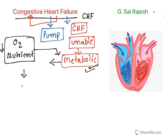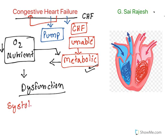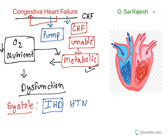Now why does this condition occur? It occurs due to dysfunction in systole as well as in diastole. Systole means contraction of the heart; diastole means relaxation of the heart. For systolic dysfunction, the primary precipitating factors are ischemic heart disease or hypertension. Ischemia means reduced blood supply. When blood supply to the heart is reduced, it results in ischemia, which may lead to myocardial infarction and finally muscle death.